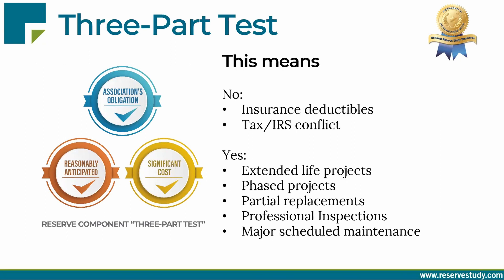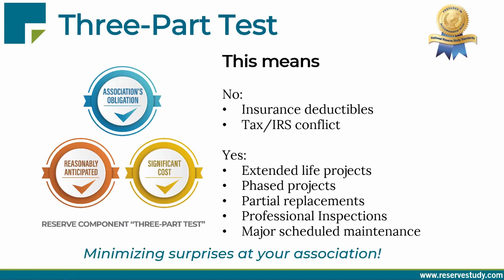With no maximum useful life limit under national reserve standards, you can and should fund reasonably predictable long-life projects like seawalls or boat ramps. If your buildings were built at different times, you're free to have different components for the different ages and phases. You can have reserve components for incremental replacements of large systems — like grinding a percentage of sidewalks each year or replacing a percentage of perimeter fencing annually. You can also include reserve components for building structural inspections, expensive tests, scheduled significant maintenance like a mid-life chiller rehab project — all so you have funds to help your most expensive components reach a long, healthy life.